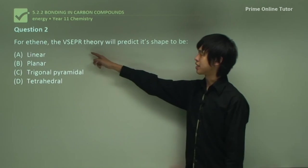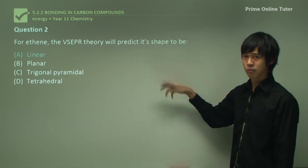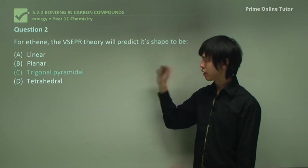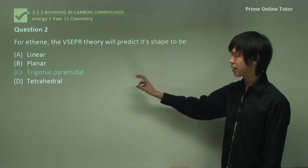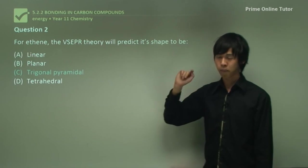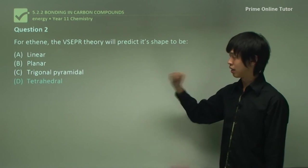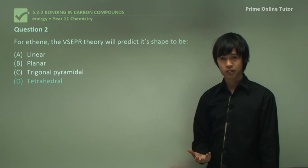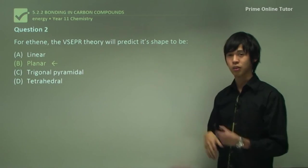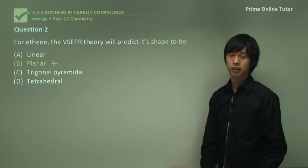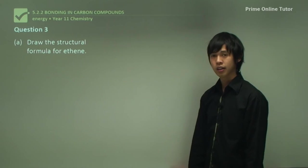Question: what shape does VSEPR predict for ethene? Linear applies to triple bonds, so that's not correct here. Trigonal pyramidal wasn't covered in this lesson. Tetrahedral applies to single bond structures only. So the correct answer is planar — ethene forms a planar structure.